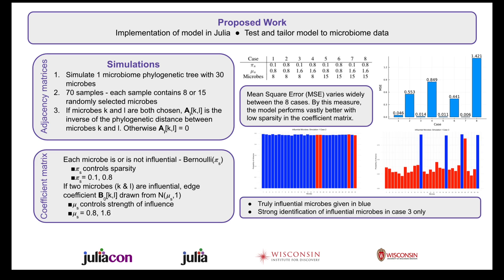Our adjacency matrices are obtained by first simulating one microbiome phylogenetic tree with 30 microbes. We then take 70 samples by randomly selecting either 8 or 15 microbes. If two microbes are both chosen, the edge between them in the adjacency matrix is set to be the inverse of the phylogenetic distance between them. The inverse is taken because the model was developed in a context where high values in the adjacency matrix indicate a strong relationship.